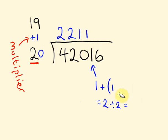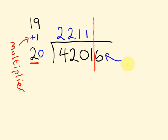So our answer so far is 2211. Now this leads us to the very last number, which I'll mark off — this is actually our remainder. We've got 6, and we need to add this number here: 1 times the multiplier (1), so 6 plus 1 is 7. Our remainder is 7. So the answer is 2211 remainder 7. Pretty cool, right?